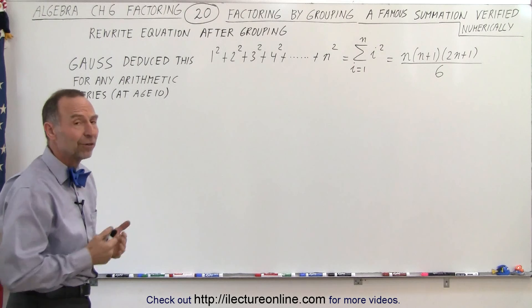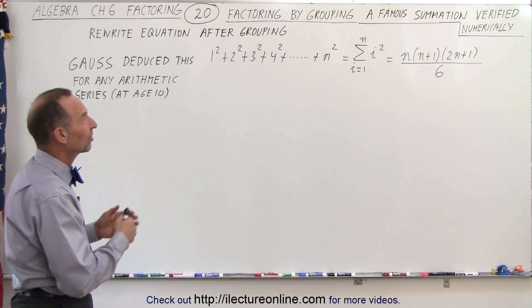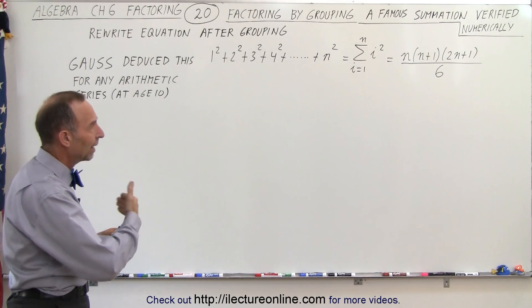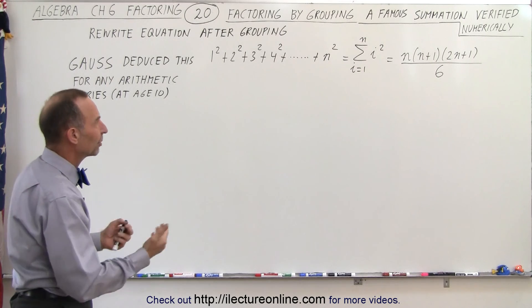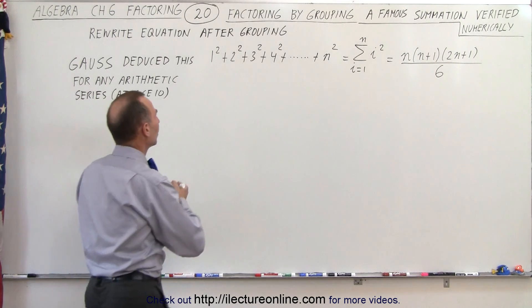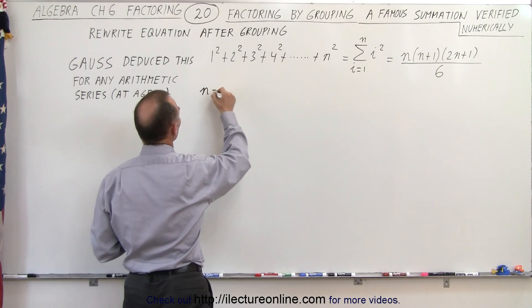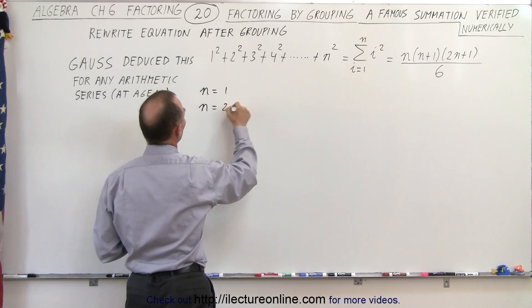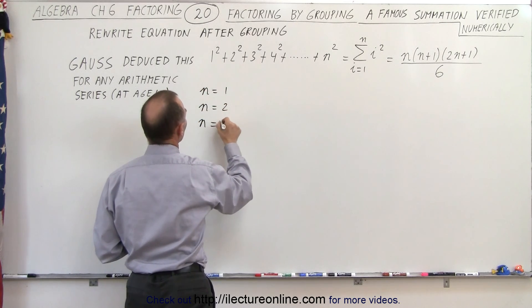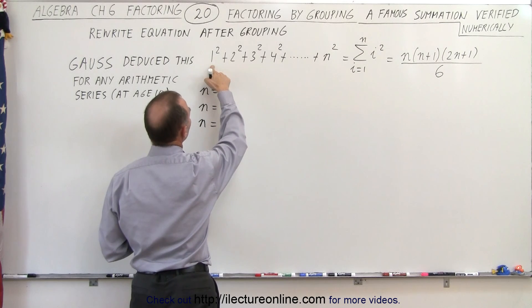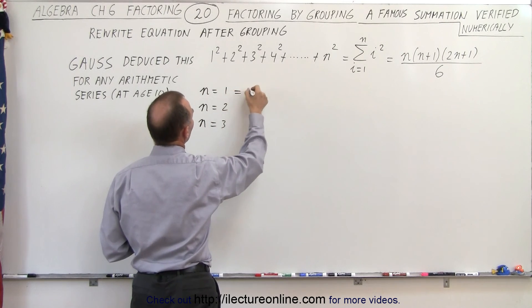Now what we're going to do in this video is take this example here, this equation, and verify it for a number of values for n. So we're going to let n equal 1, n equal 2, and n equal 3. Now when n equals 1 we have 1 squared equals 1.